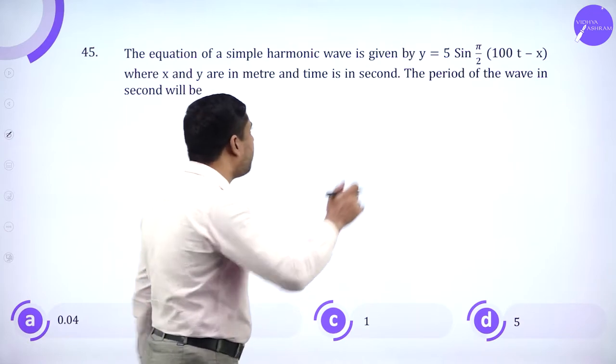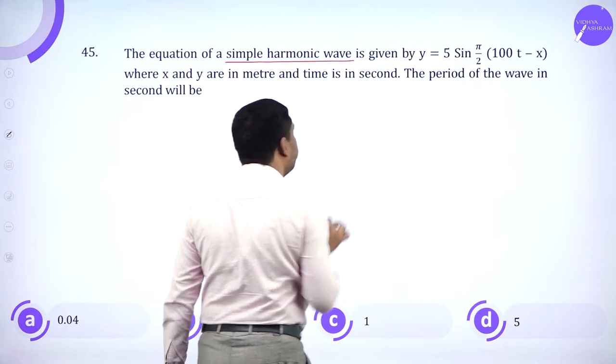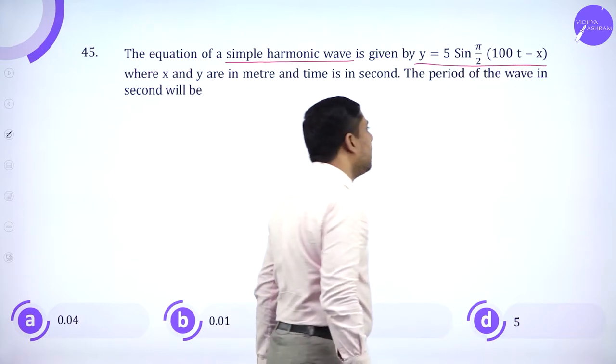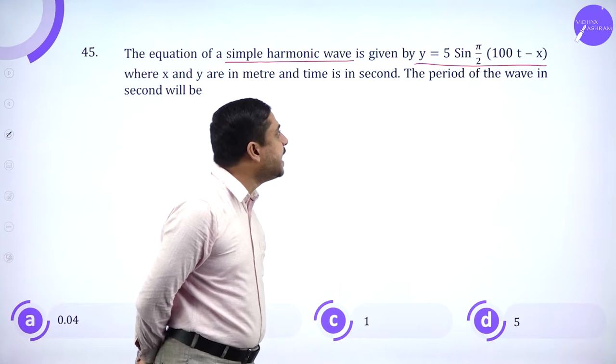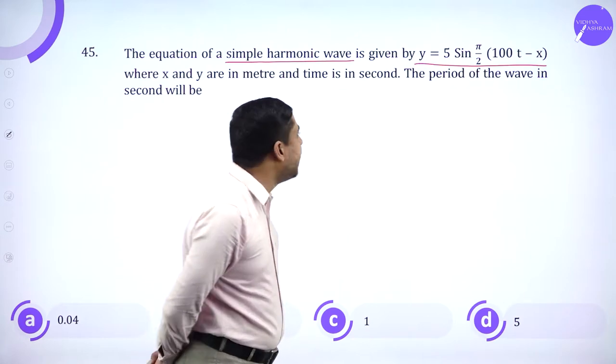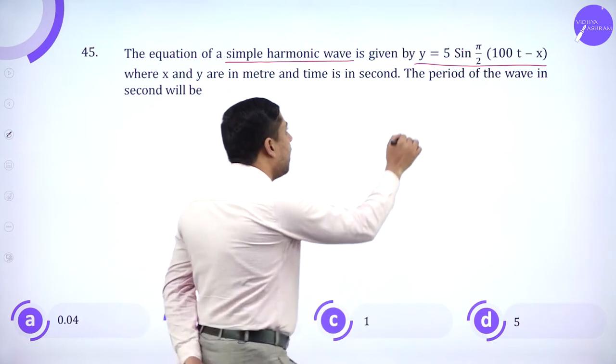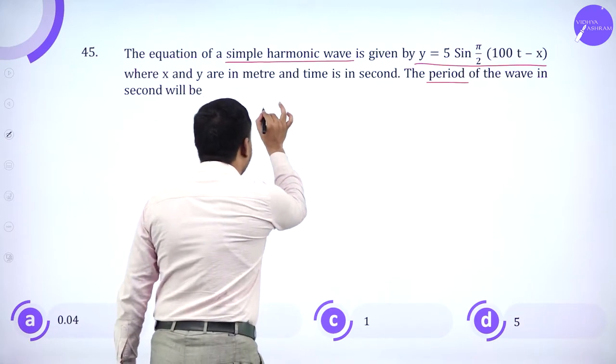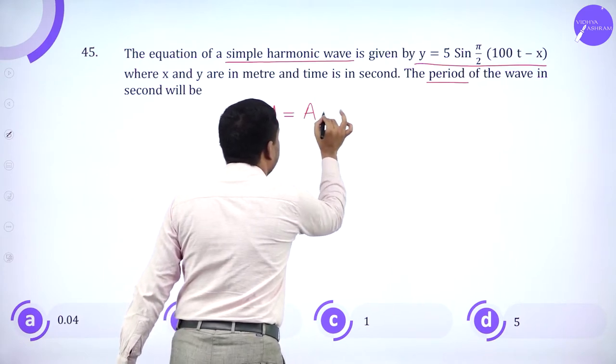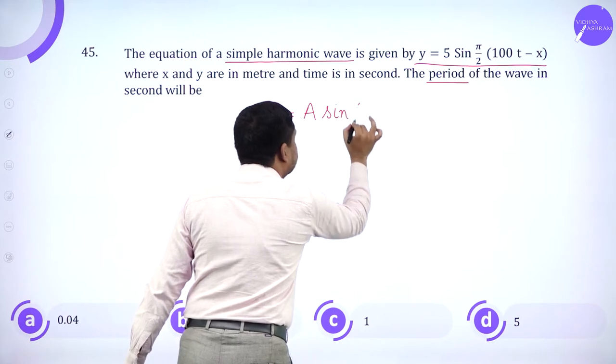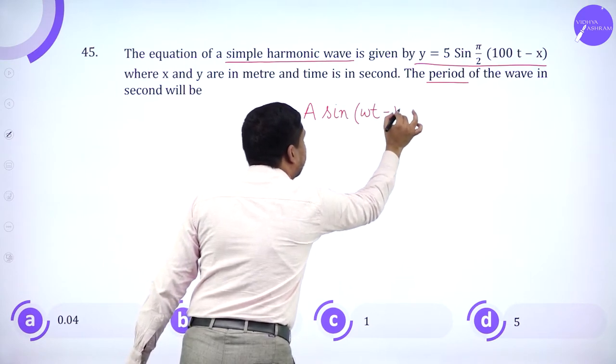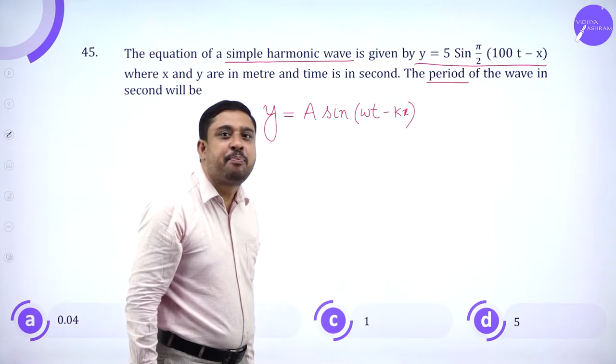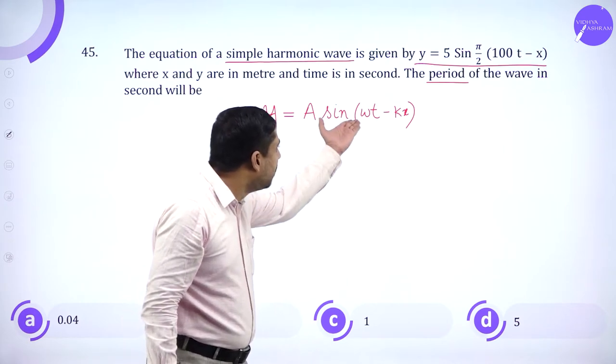The equation of a simple harmonic wave is given by y equals 5 sine pi by 2 times 100t minus x. I have to calculate the period of the wave. First I compare it with the standard equation y equals A sine omega t minus kx.